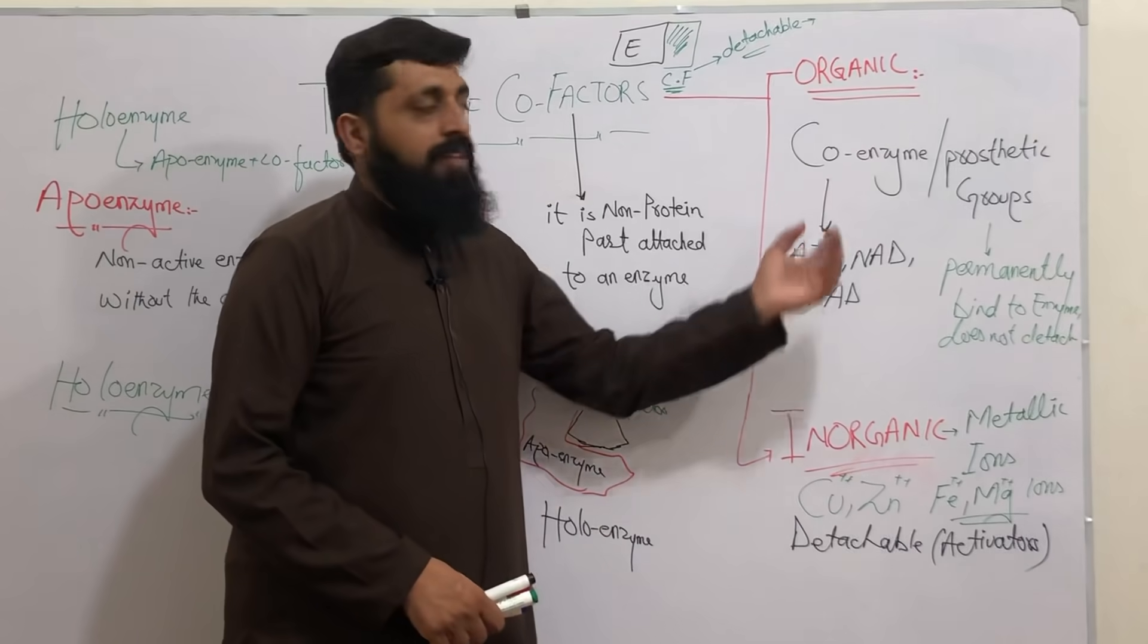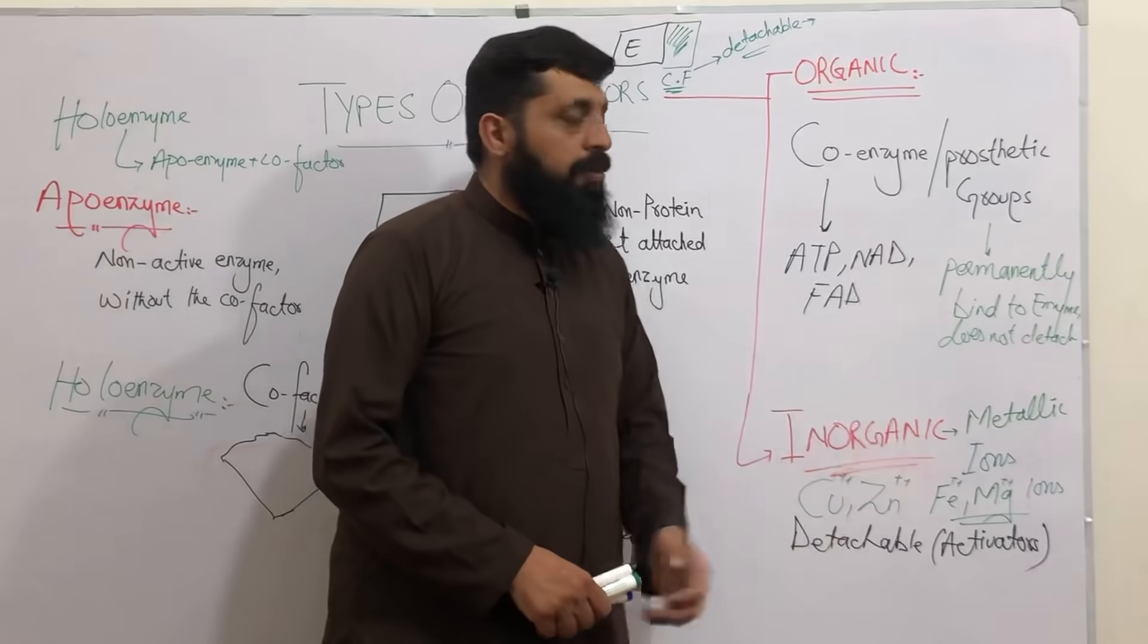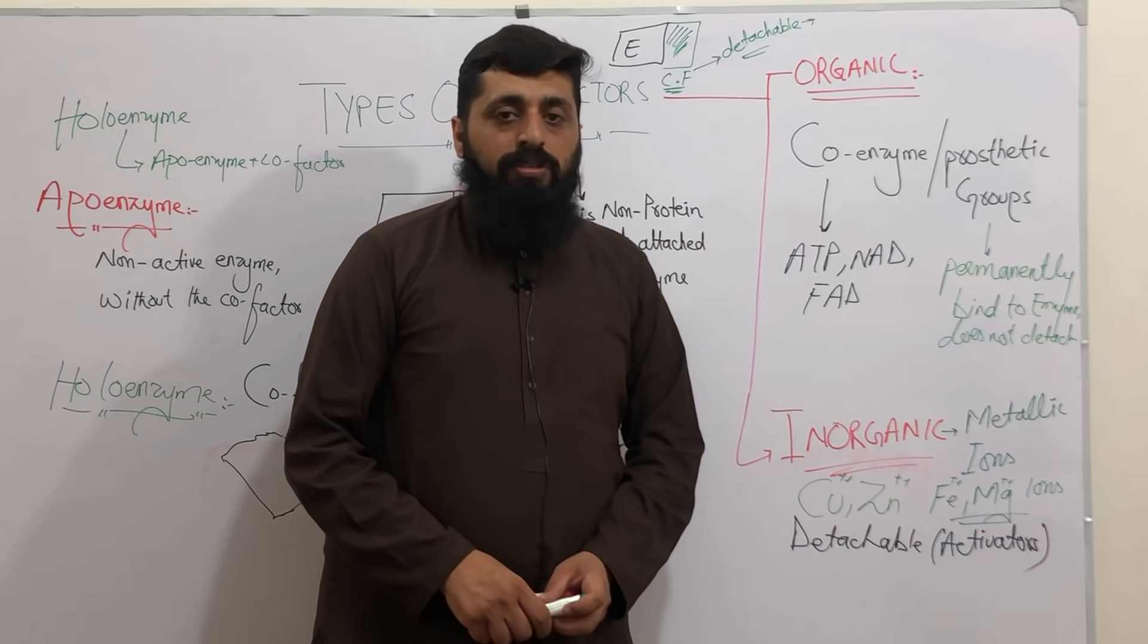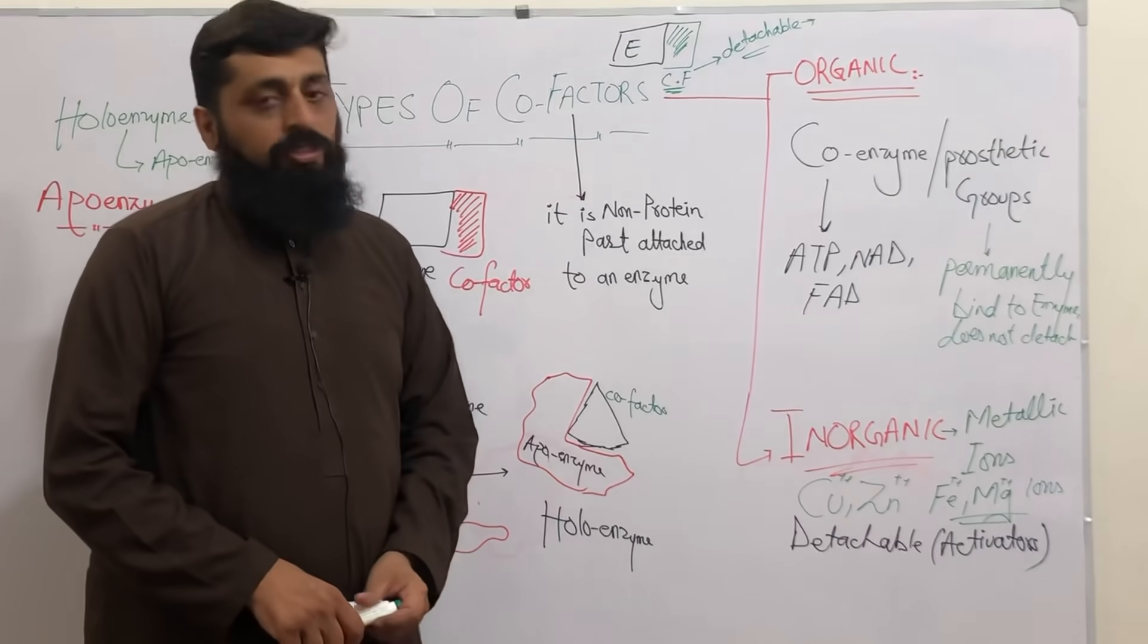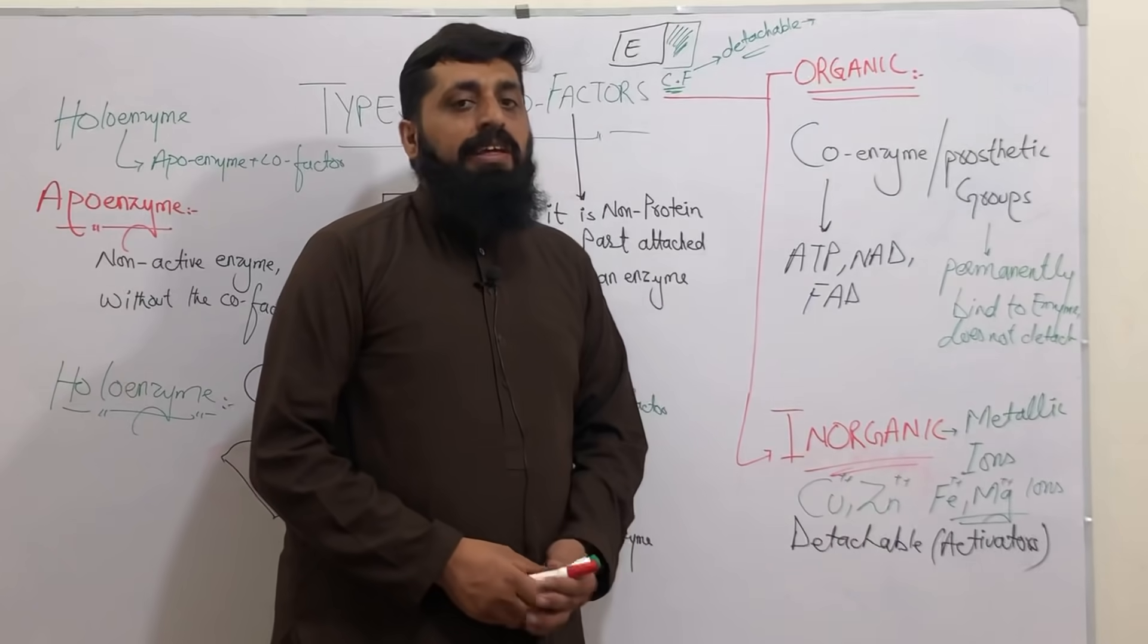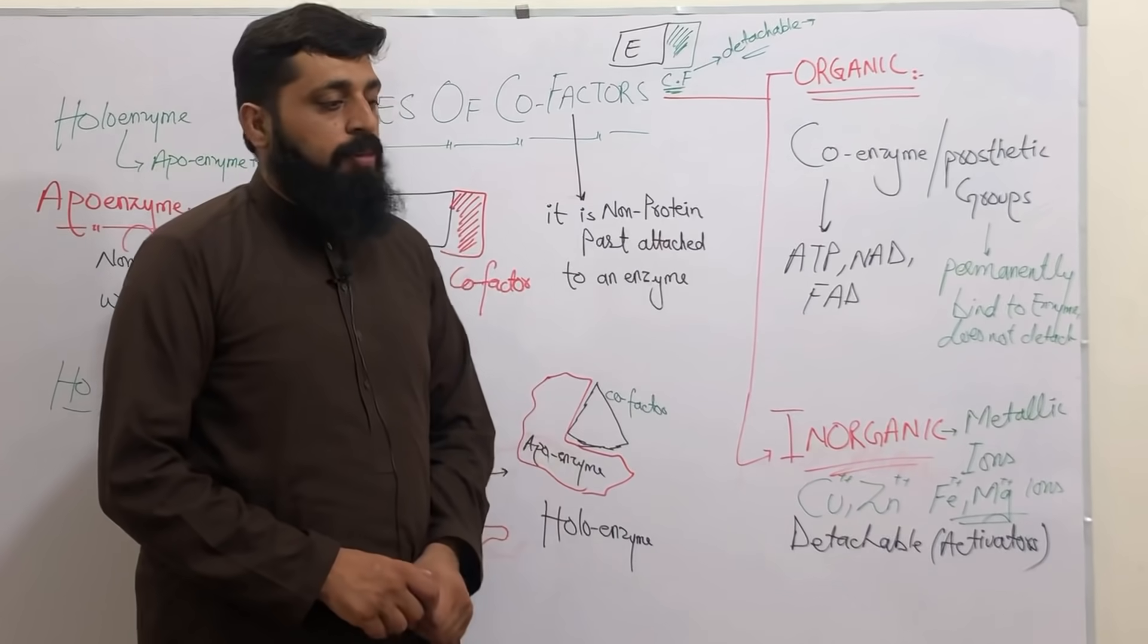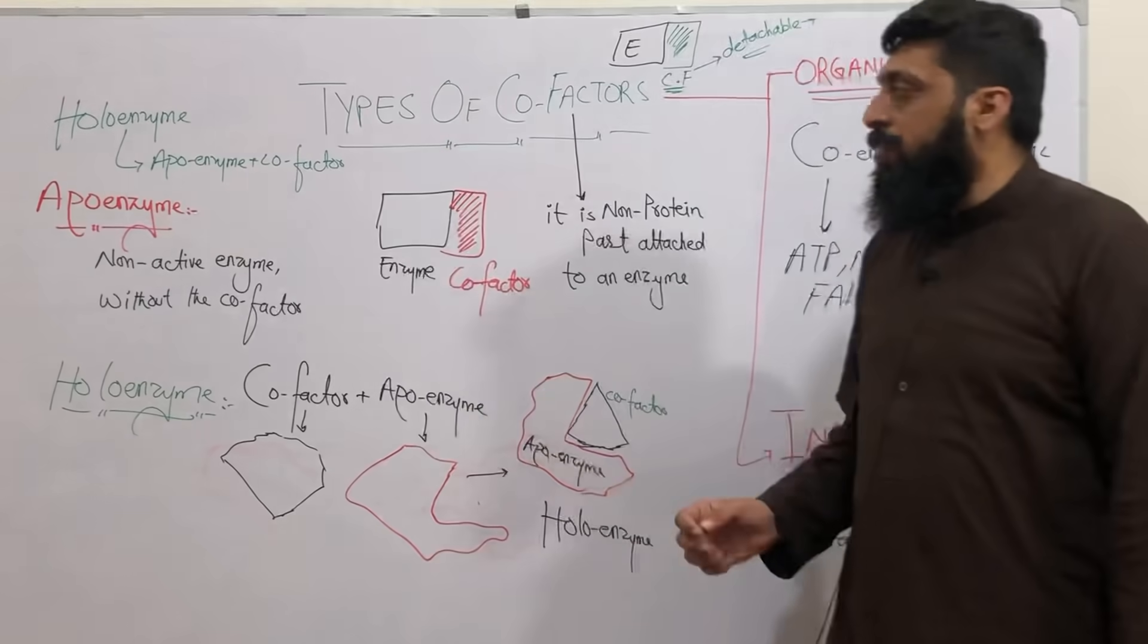Then we have the prosthetic group. Prosthetic groups are strongly attached - they form the bond with that apoenzyme and are permanently attached. Since they are attached permanently, they don't get detached. The bond formation is covalent bond formation, which is quite strong.